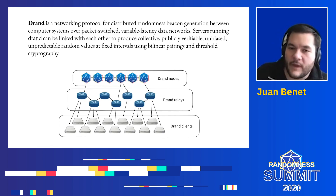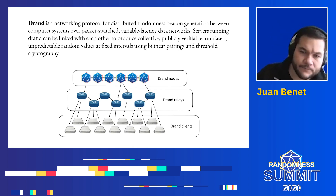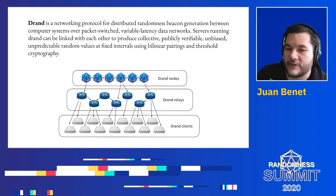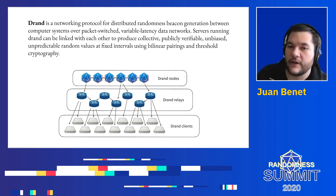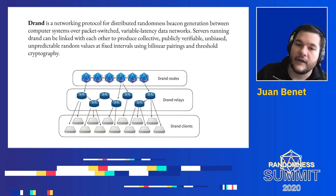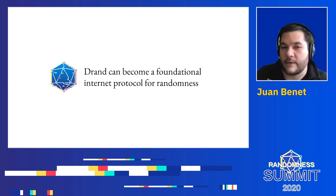We'll hear a lot more about how DRAND works later on, but that's effectively a similar structure — there are a set of DRAND nodes and some DRAND relays that can spread out the information across the network, and eventually clients use the randomness that comes from the source DRAND nodes in their applications. DRAND is designed to be a very concrete and concise protocol to do just that, and therefore it can become a foundational Internet Protocol for randomness.